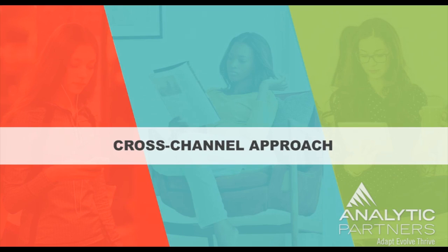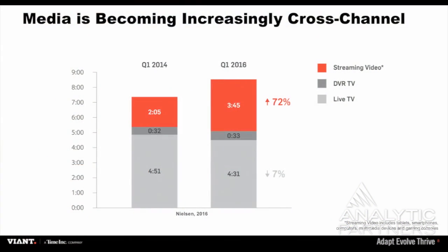Segueing to cross-channel — there's been a lot of discussion today about cross-channel media mix modeling. This is a chart borrowed from Nielsen looking at video consumption from Q1 2014 to Q1 2016, a 24-month period, covering live TV, DVR, and streaming video — smartphones, computers, multimedia devices, game consoles all included. The biggest thing you'll notice is TV is still extremely significant and not going away, but it has slightly declined over that period, while all the growth is in streaming video, with total hours actually increasing as well.